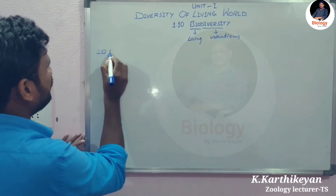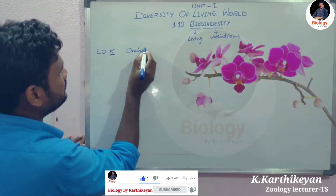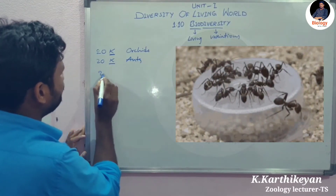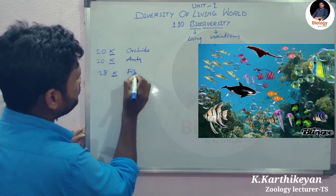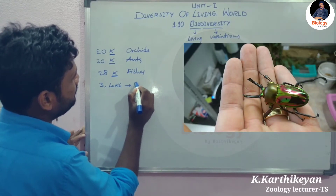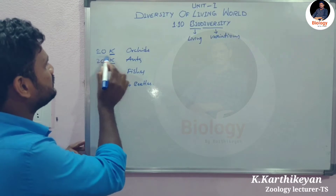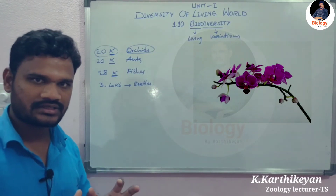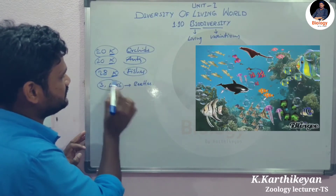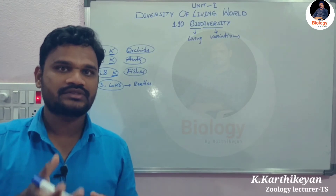On Earth there are 20,000 species of orchids, 20,000 species of ants, 28,000 species of fishes, and three lakh species of beetles. These numbers illustrate the vast variations in living organisms — for example, within the orchid species alone there are 20,000 variations.